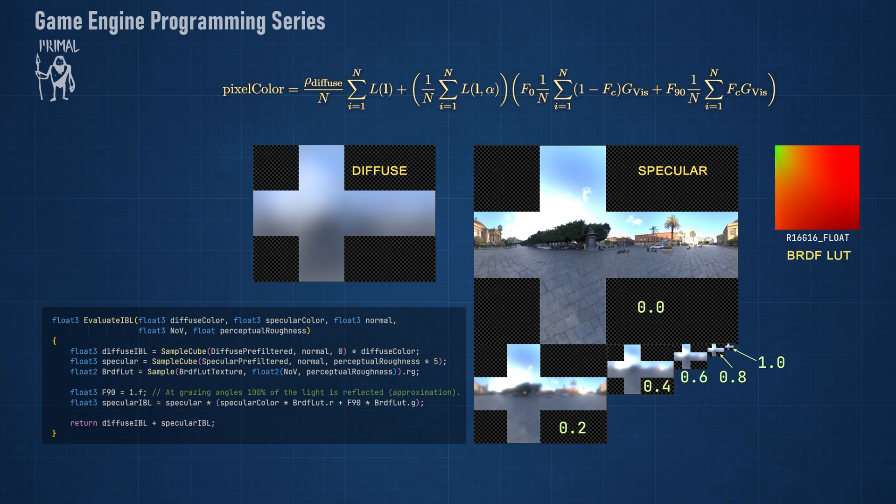As we know from the PBR episode, specular color is the F0 term and we can approximate F90 by setting it to 1. To get the final pixel color, we add the diffuse and specular parts together and return it.